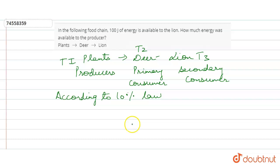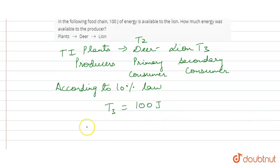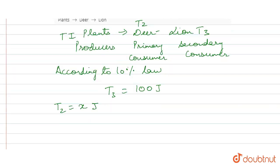If we see the line at T3, total energy is 100 joules. That means, if we think that Deer has some amount of energy, Deer has X joules of energy.